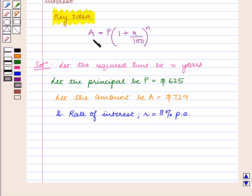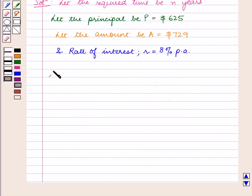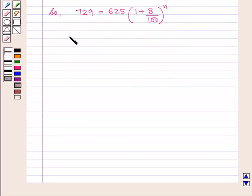As we know, amount A equals P times (1 plus R upon 100) raised to power N. So, 729 equals 625 times (1 plus 8 upon 100) raised to power N.